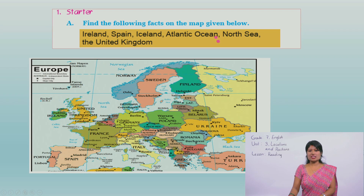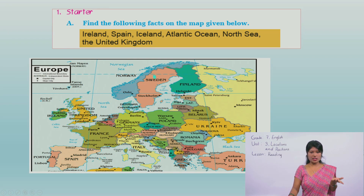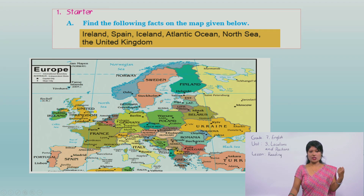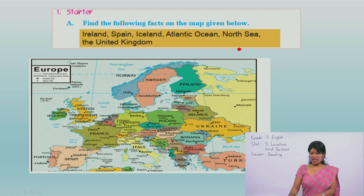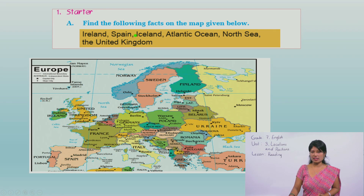What do you see? Which countries, which places can you see in this map? You can see Sweden, Norway, France, Ireland, United Kingdom, Ukraine, Turkey, Spain - many countries are there. Among these, we have to find out the ones mentioned in the yellow box. I hope you have turned your book and are looking at this map and the facts.